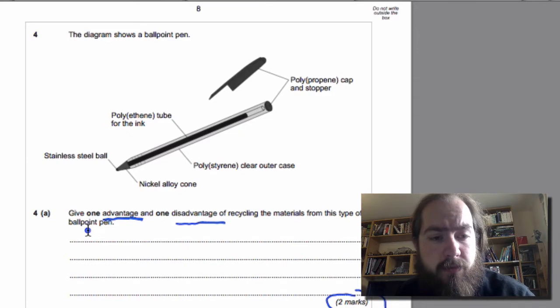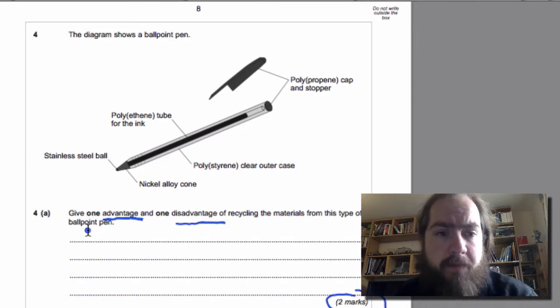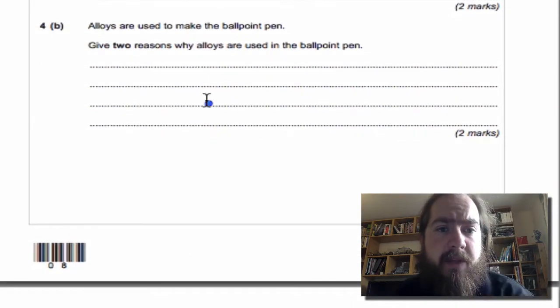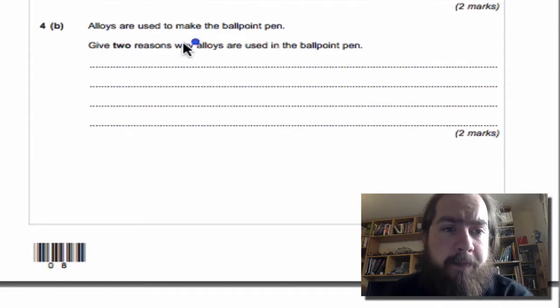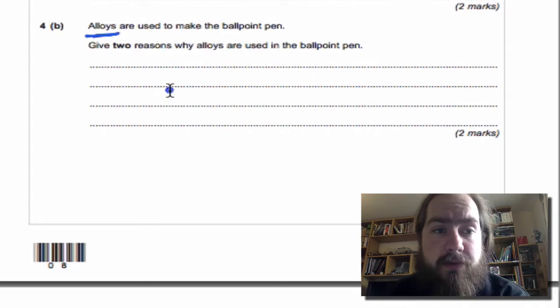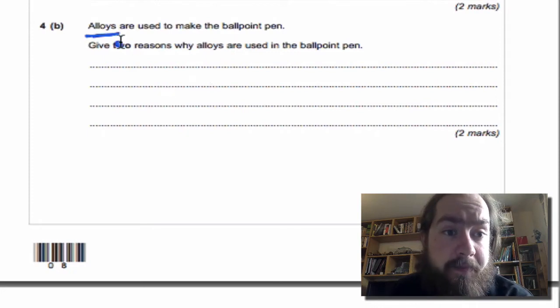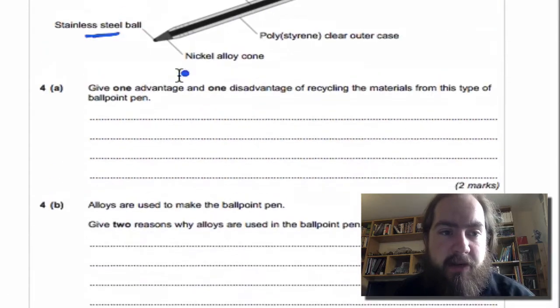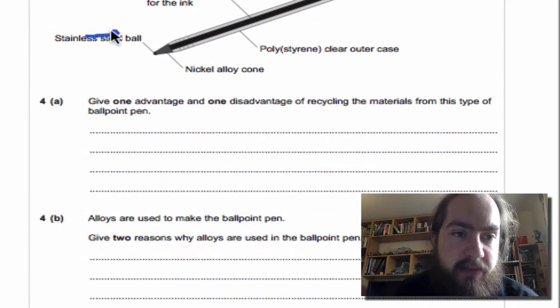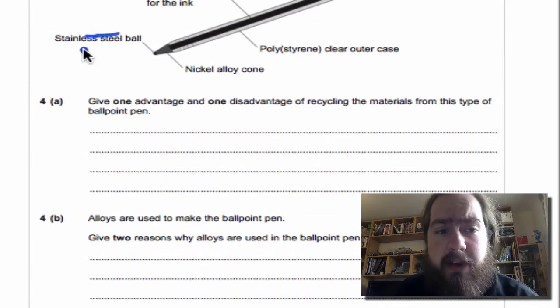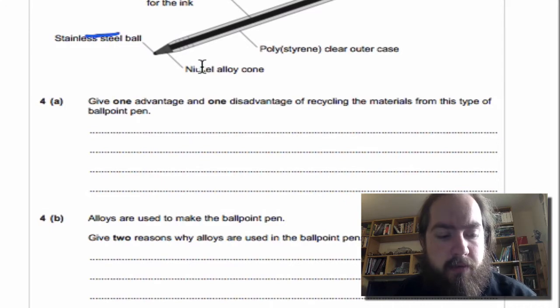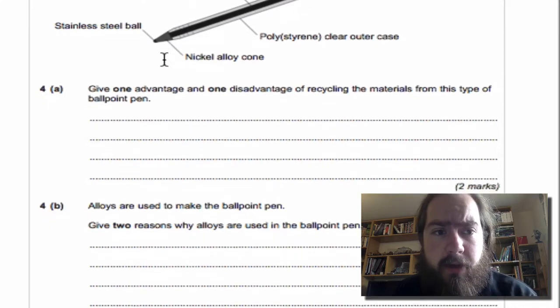Question 4b: Alloys are used to make the ballpoint pen. Alloys, remember, are a mixture of two or more metals or metal and carbon. Give two reasons why alloys are used in the ballpoint pen. They're used in the nib of the pen. If we go back at the diagram here, there's a stainless steel—steel being an alloy—and a nickel alloy cone.